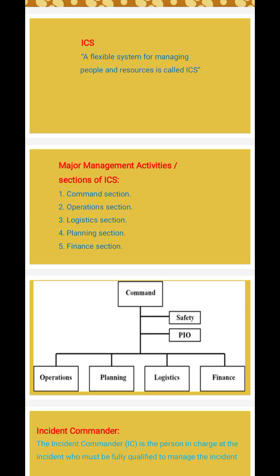What are the major management activities of incident command system? The incident command system contains five sections: first, command section; second, operation section; third, logistics section; fourth, planning section; fifth, finance section.